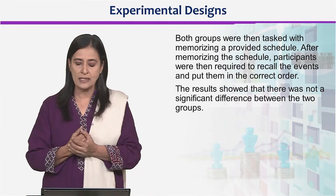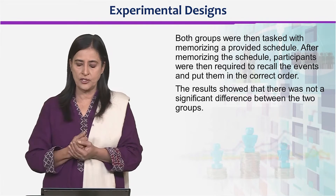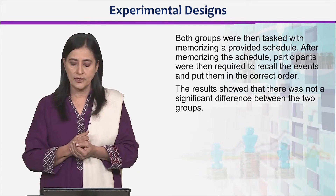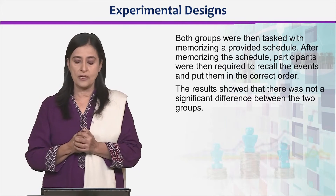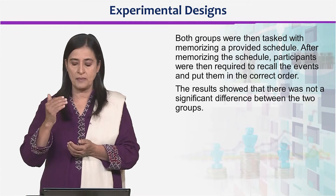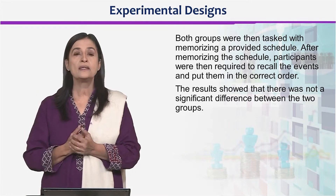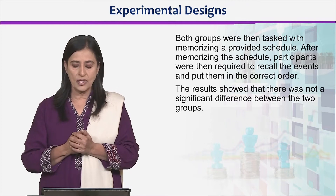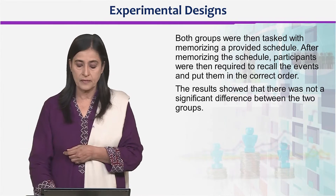It's not a complicated experiment. Participants jo successful group ke the, unhone ek statement likhi baar baar: 'I am successful.' Aur jo failure group ke participants the, unhone bhi repeatedly statement likhi. Dono groups ko ek aise task di gayi jisme unhone memorize karna tha — a provided schedule. After memorizing the schedule, participants were required to recall the events and put them in the correct order. The results showed that there was not a significant difference between the two groups.